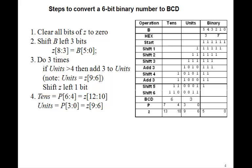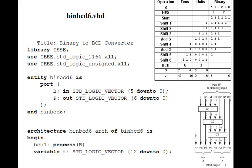And we showed how it went for the 6-bit number using this algorithm, where we clear all the bits in Z, shift B three bits to the left, and then do, in this case, three times, and add our algorithm: if units is greater than 4, then we add 3. So let's see how we can write a VHDL program to do this. Here's the binary to BCD6 for this 6-bit case, say of 3F.